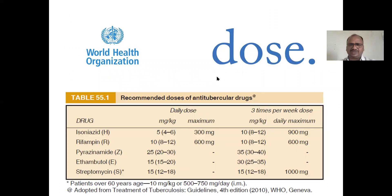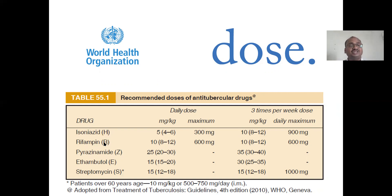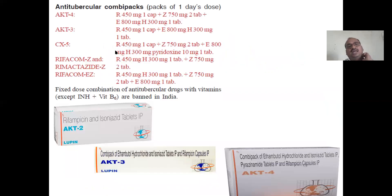Regarding doses: isoniazid, rifampicin, and all other first-line drug doses must be practiced. The maximum doses are also given. The alphabetical codes are important: H for isoniazid, R for rifampicin, Z for pyrazinamide, E for ethambutol, and S for streptomycin — don't get confused.